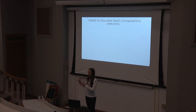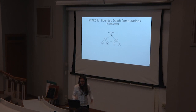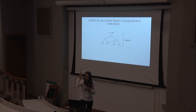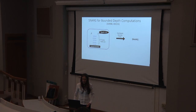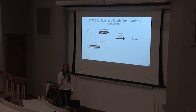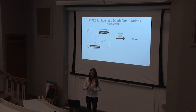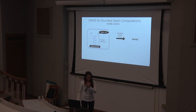For SNARGs for bounded-depth computation: I model computation as a layered circuit, where depth is the number of layers. The construction starts with an interactive proof whose number of rounds is proportional to the depth D of the circuit, so it's good for shallow circuits. The verifier's running time grows with the depth. This interactive protocol has statistical soundness, and we then convert it to a SNARG using the Fiat-Shamir heuristic.